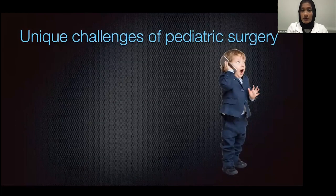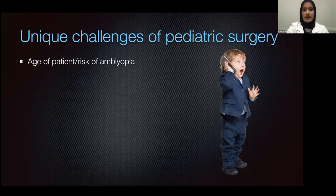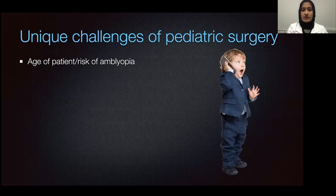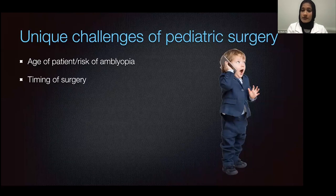Kids are not just little adults. They have different developmental needs and different outcomes with their corneal transplant surgery. It's extremely important to not treat the parents, the family, the patients, the surgery, or the postoperative outcome as though you are treating a young adult. The age of the patient presents an increased risk with corneal transplant surgery. If these kids are born with a central corneal opacity, they are going to have a much denser amblyopia than if the opacity developed later in life after they've already moved past the amblyogenic phase of vision development. The timing of surgery is also extremely important.